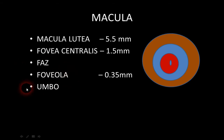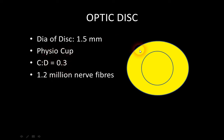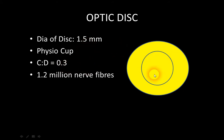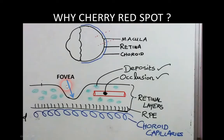The foveola contains only cones and no other retinal layers. Moving on to the optic disc: the diameter is 1.5 mm with a physiological cup. The cup-disc ratio is 0.3 — the cup occupies three out of ten. This ratio is increased in conditions like glaucoma, where there is pathological cupping. Another frequently asked point: the optic nerve contains 1.2 million nerve fibers.